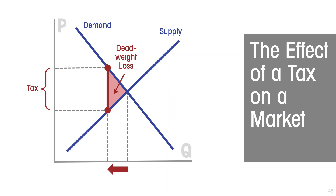The tax distorts the economy. It disincentivizes the production and consumption of a product that society actually values at more than the cost of production. So we end up producing and consuming a less valuable and less desirable set of goods and services.